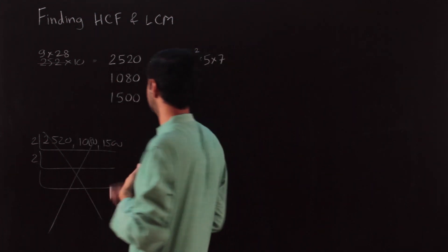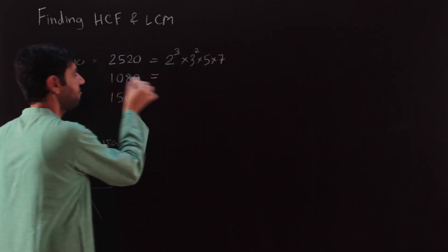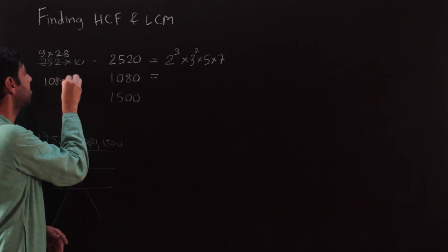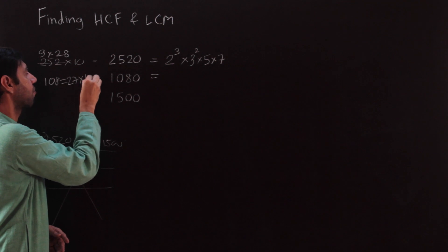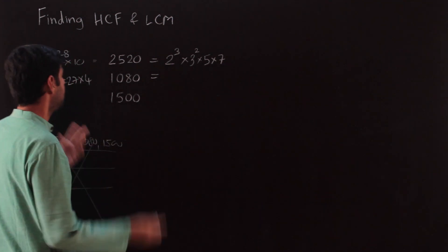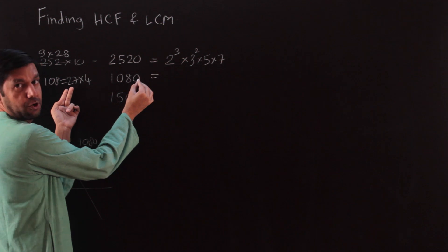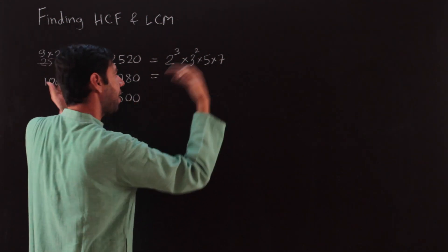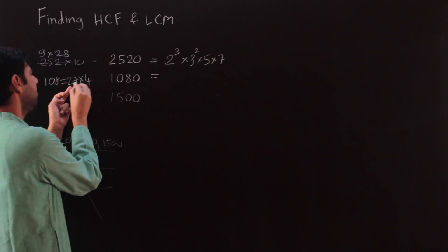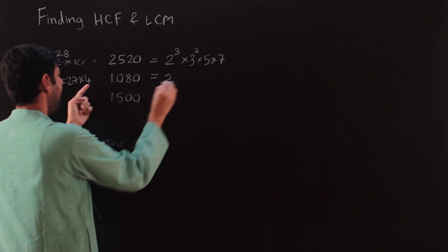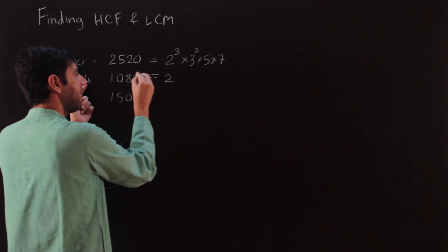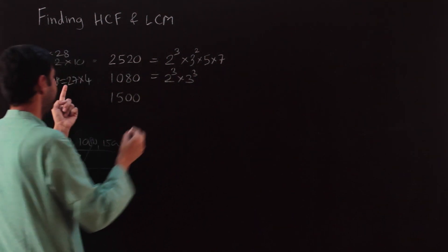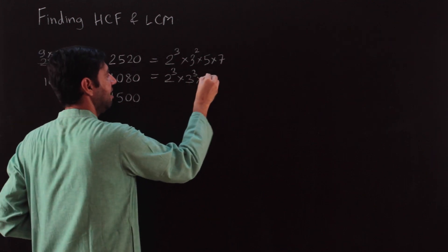1080 should be factorized in one go. You should know that 108 = 27×4. So 1080 = 27×4×10. Don't forget the 10, which provides a 2 and a 5 — so powers of 2 and 5 will be incremented. That gives 2 squared from the 4, times 2 from the 10 equals 2 cubed, 3 cubed for the 27, and a 5 from the 10. So 1080 = 2³ × 3³ × 5.